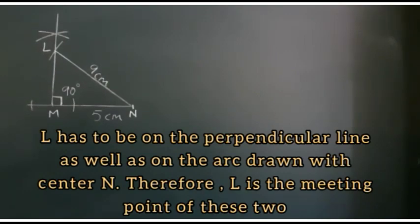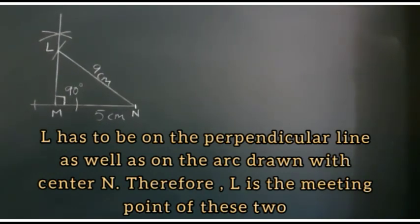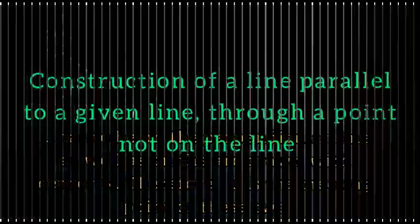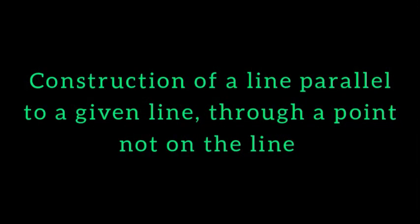So the triangle LMN is now formed. Next, we are going to consider the topic construction of a line parallel to a given line through a point not on the line.